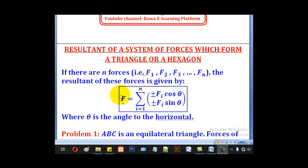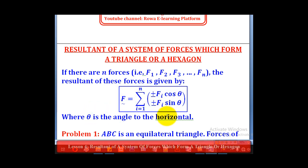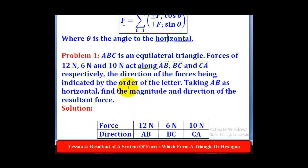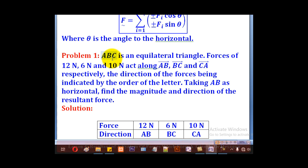This formula was already seen in the previous lesson. Note that theta is the angle to the horizontal. So we shall start with a problem. ABC is an equilateral triangle. Forces of 12N, 6N, and 10N act along AB, BC, and CA respectively. The direction of the forces being indicated by the order of the letter. Taking AB as horizontal, find the magnitude and direction of the resultant force.